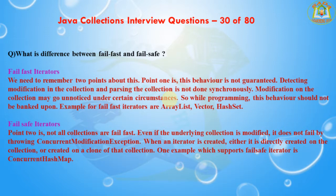Detecting modifications in the collection is not done synchronously, so modifications may go unnoticed under certain circumstances. Therefore, while programming, this behavior should not be relied upon. Examples of fail-fast iterators include ArrayList, Vector, and HashSet. The ArrayList fail-fast iterator throws ConcurrentModificationException.